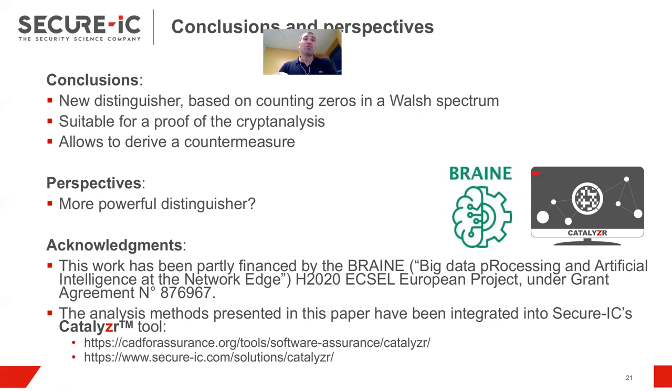And so, we managed to provide with a proof, which was really not so trivial. And so, from this proof, we managed to derive a countermeasure from the selection of the linear function phi. So, maybe there are even stronger distinguisher than the one we introduced, but apparently we exploit for our cryptanalysis, we understood the weakness and we exploit it. So, we believe we are close to optimal.